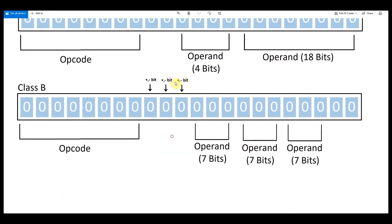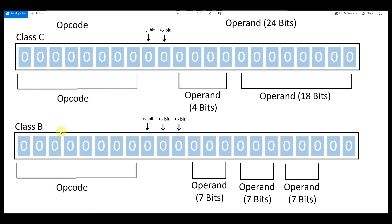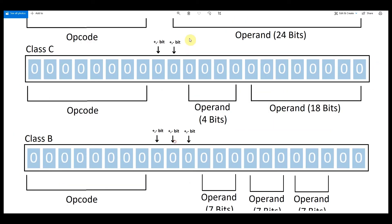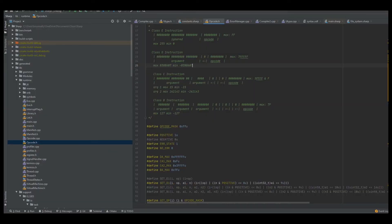Class B instructions have three plus-or-minus bits and three consecutive operands that are each seven bits wide. If we multiply seven bits times three, that's 21, plus three sign bits equals 24 — which is exactly the maximum of 24 bits. Each of these values has a maximum of 127.